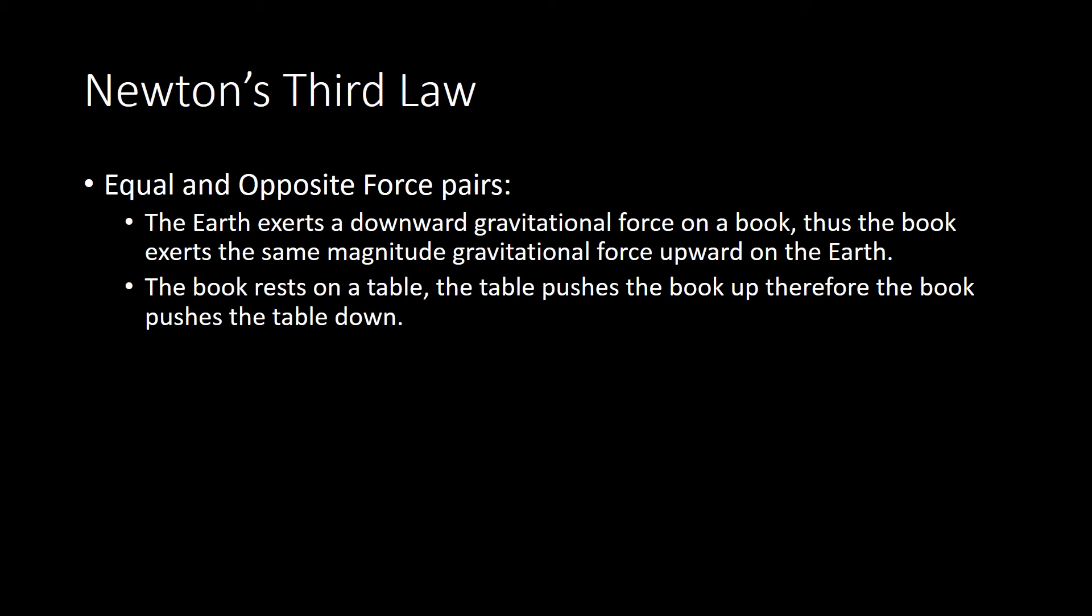So there's a couple of tricks that we can use in order to help make sure that we are in fact thinking about a third law force pair. So if you're talking about a third law force pair, the first thing to notice is that the force is going to be the same. In the first case we talked about the gravitational force by the earth on the book paired with the gravitational force by the book on the earth. And similarly we were talking about the normal force exerted by the table on the book and matching that with the normal force exerted by the book on the table. So the force must be the same type of force, gravity with gravity, normal with normal, friction with friction, etc.